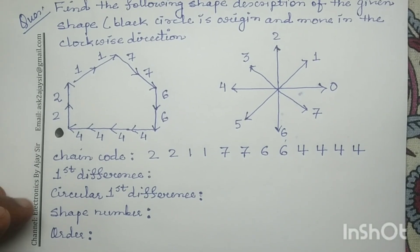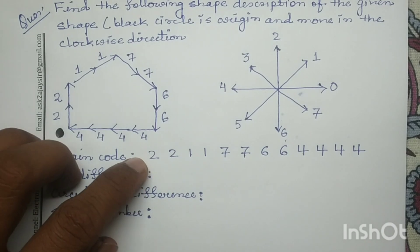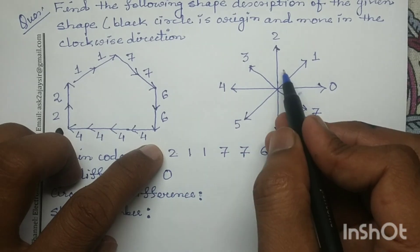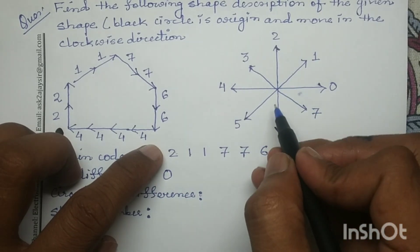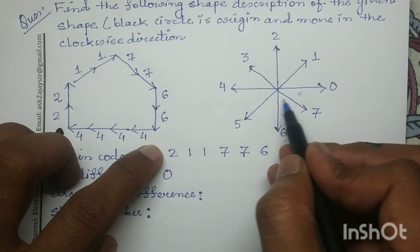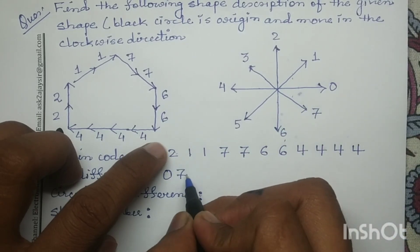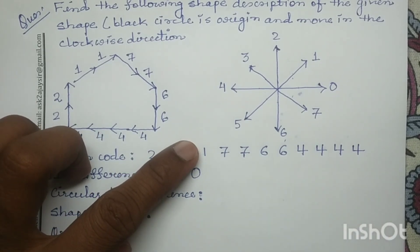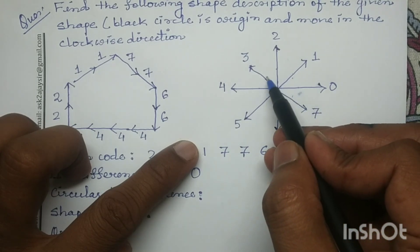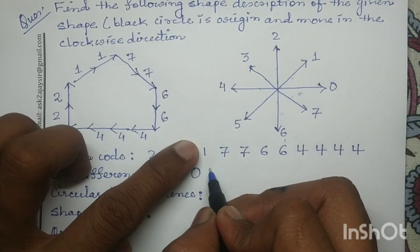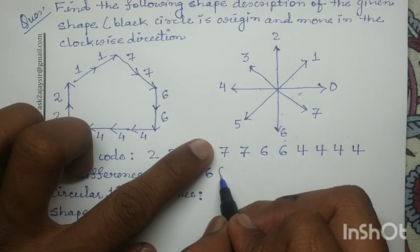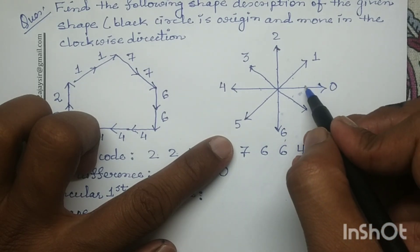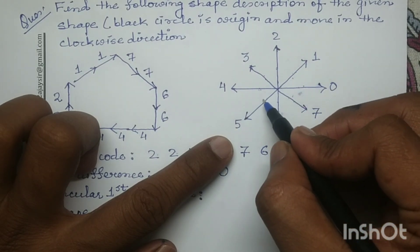Next we have to determine the first difference. From 2 to 2, the difference is 0. From 2 to 1, in the anticlockwise direction the difference is 7. From 1 to 1, the difference is 0. From 1 to 7, in the anticlockwise direction the difference is 6. From 7 to 7, the difference is 0. From 7 to 6, in the anticlockwise direction the difference is 7.